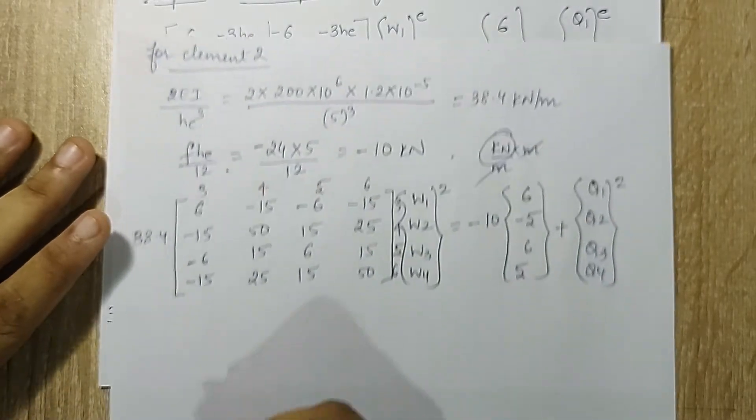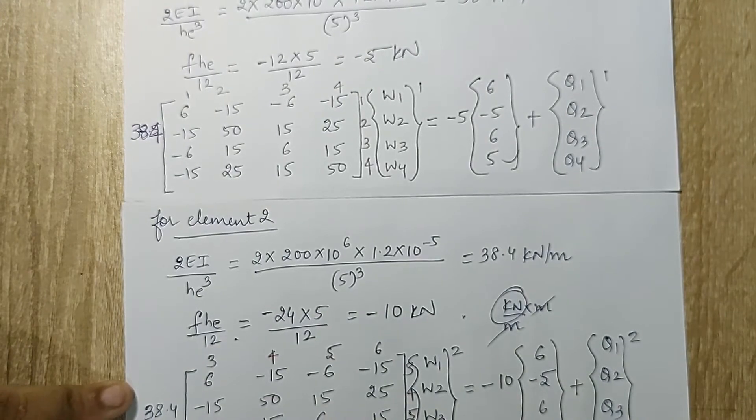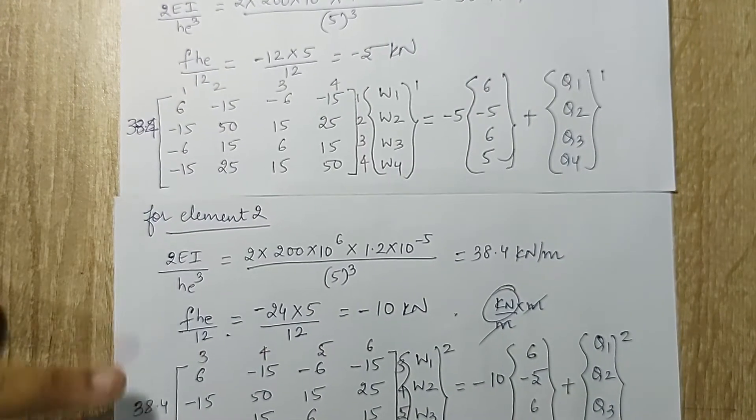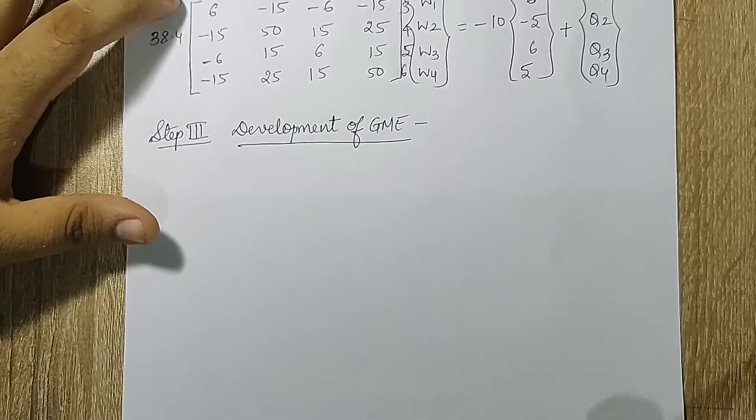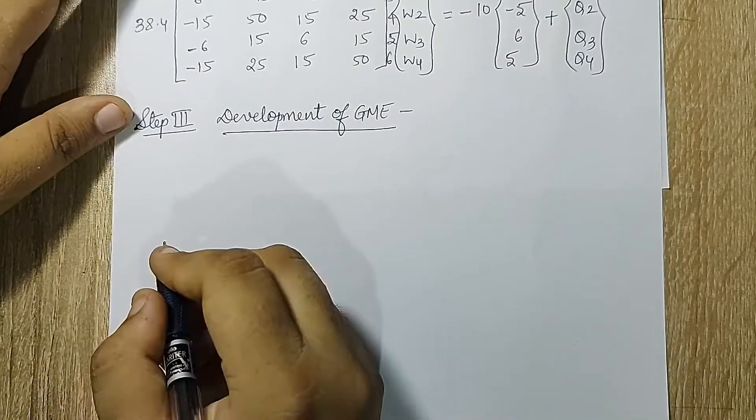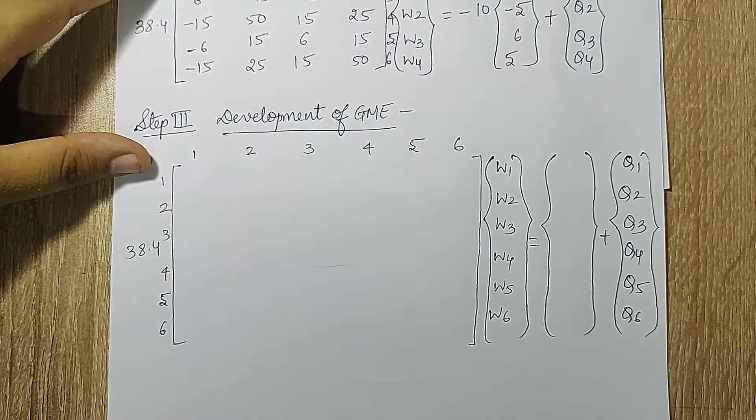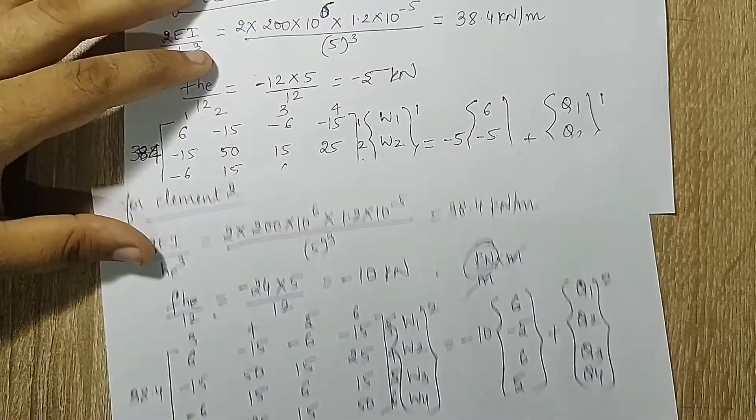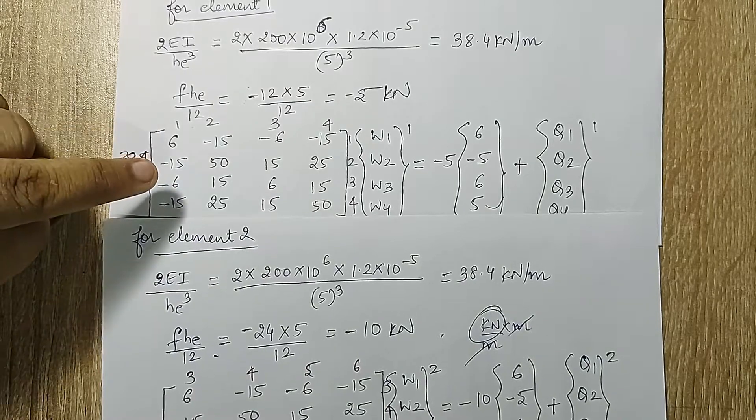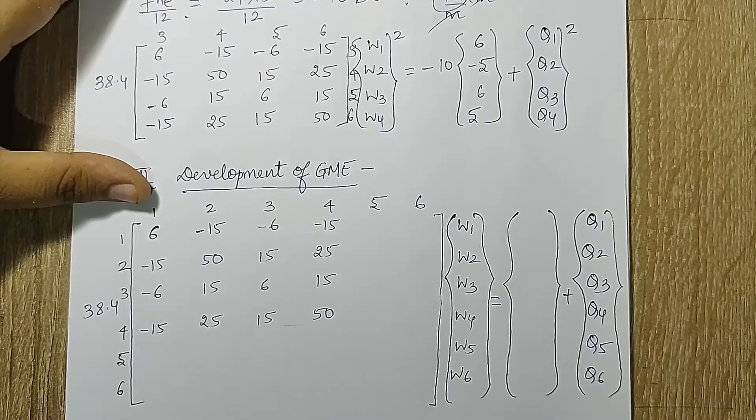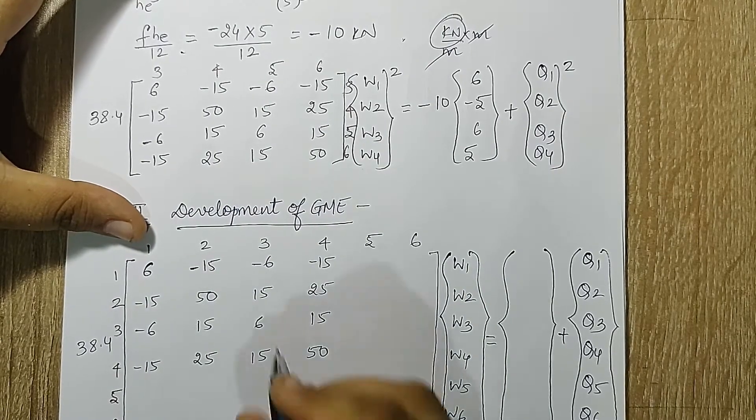Now I'll go to step 3 which is development of GME. For both the equations that I have written I have a 38.4 term common for both of them. I have 6 as the highest degree of freedom. So this will be a 6 by 6 matrix. Now I'm going to fill up these values. First element has the stiffness matrix between 1,2,3,4. Now element 2 is between 3,4,5,6.